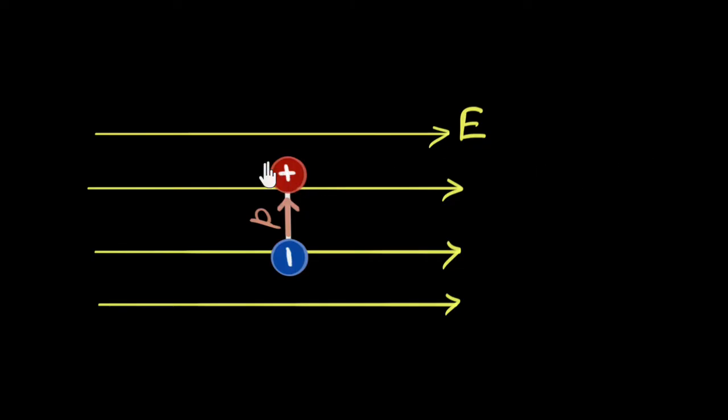All right, so I know positive charge experiences a force in the same direction as the electric field. And so it's gonna get pushed this way. And negative charge experiences a force in the opposite direction of the electric field. And so it's gonna get pushed this way. And since the two charges have the same strength and it's in the same electric field, the two forces will be exactly equal and opposite.